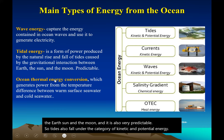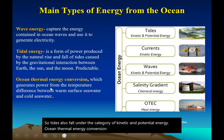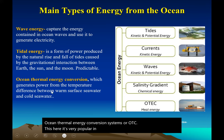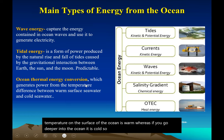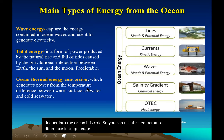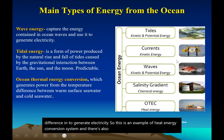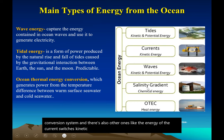Ocean Thermal Energy Conversion systems, or OTEC, are very popular in the tropics where the sun is very hot. The temperature on the surface of the ocean is warm, whereas deeper in the ocean it is cold. You can use this temperature difference to generate electricity — this is an example of a heat energy conversion system. There are also other types, like the energy of ocean currents, which is kinetic energy, and the energy of the salinity gradient, which is chemical energy.